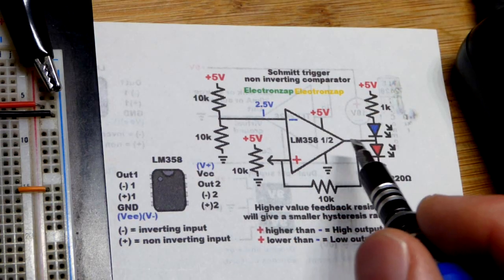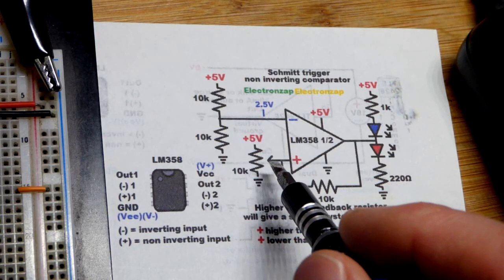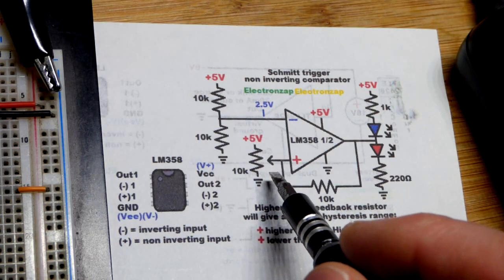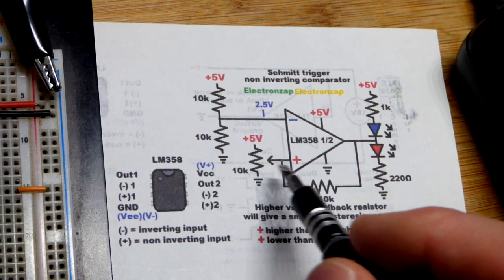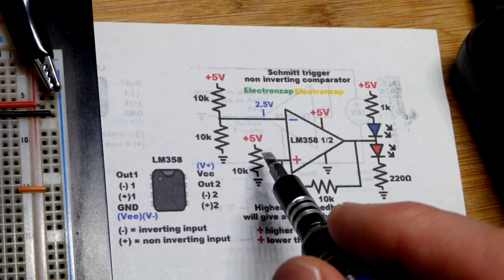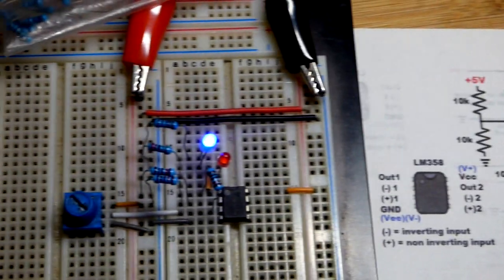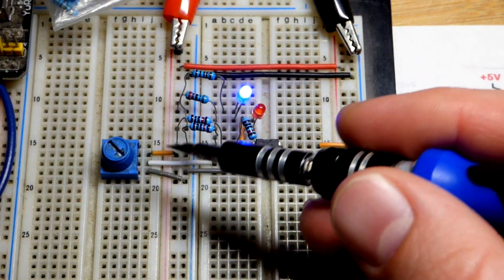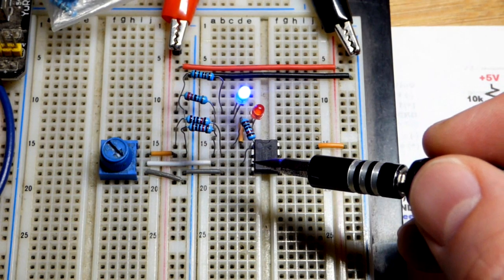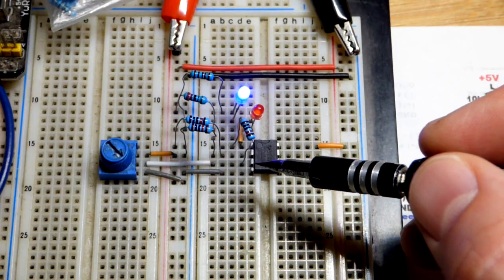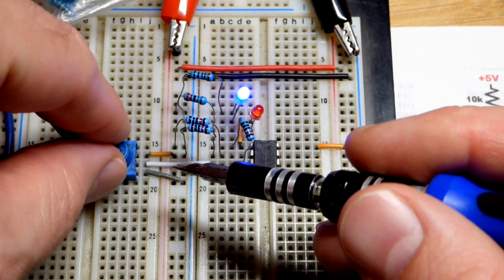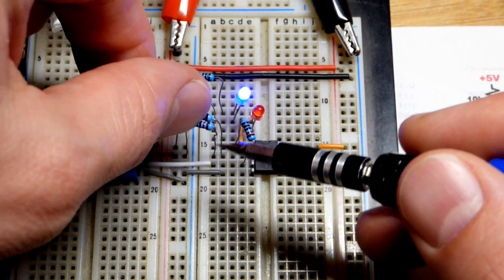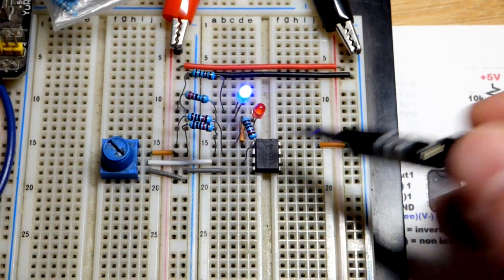We have to go up to the upper threshold and overcome that before the output will go high. And then we have to go down below the lower threshold in order to set the output low. That middle ground region, it can be in either state. So we'll look at that now. Again, just a comparator. We got our trim pot to set a voltage.